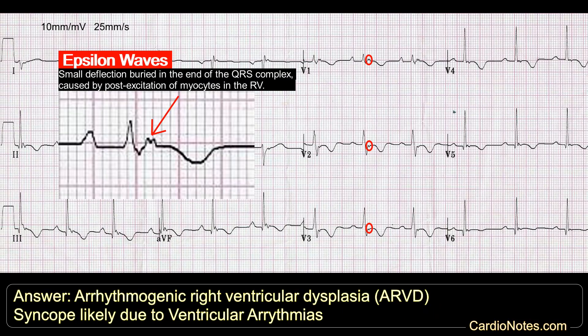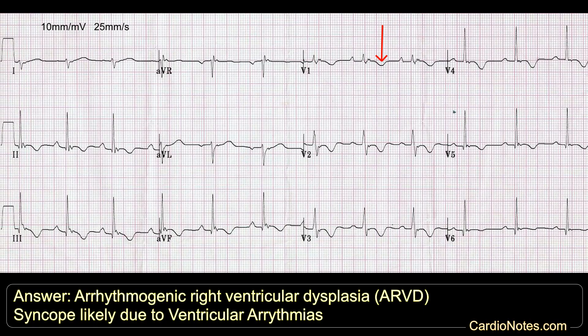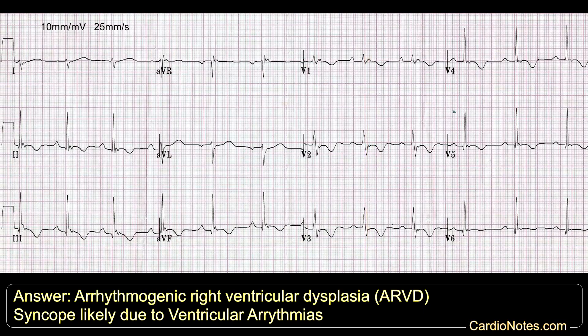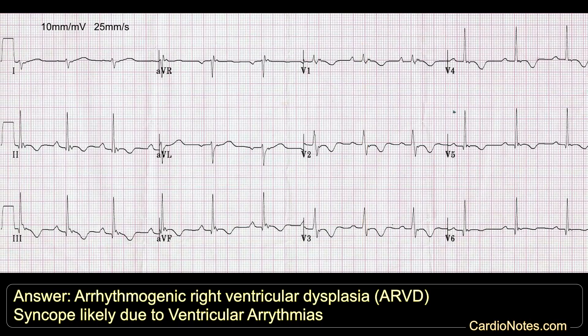Note the epsilon wave, which is the most specific finding, seen in 30% of patients with ARVC. There are T-wave inversions in V1 to V3. Prolonged S-wave upstroke of 55 ms in V1 to V3. Also note the localized QRS widening of 110 ms in V1 to V3. All these findings are consistent with a diagnosis of arrhythmogenic right ventricular dysplasia.